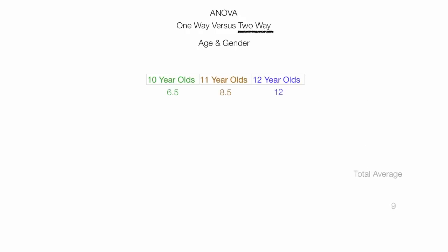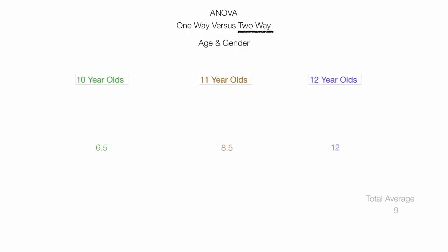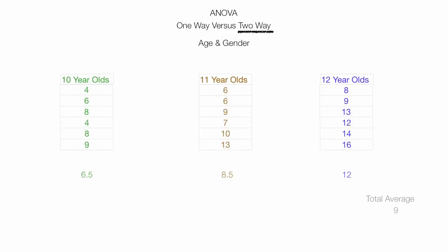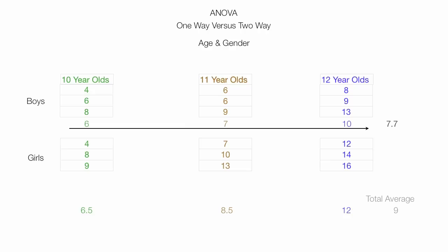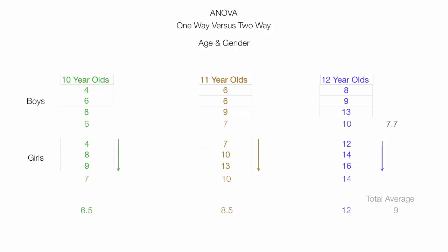It's more complicated. Let's imagine I want to analyze my data by age and gender. I'll put my test scores back in for the 10-year-olds, 11-year-olds, and 12-year-olds. I'm going to label the first group boys and the bottom group girls. I take the average scores for each age group for the boys, then the total average for all boys, which is 7.7. Then I do the same for the girls, and their average score is 10.3.